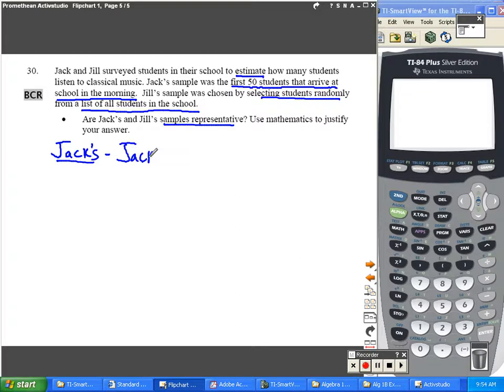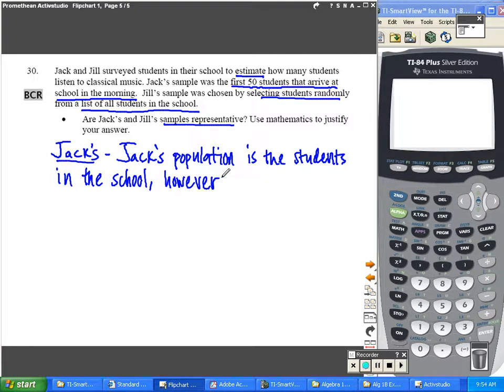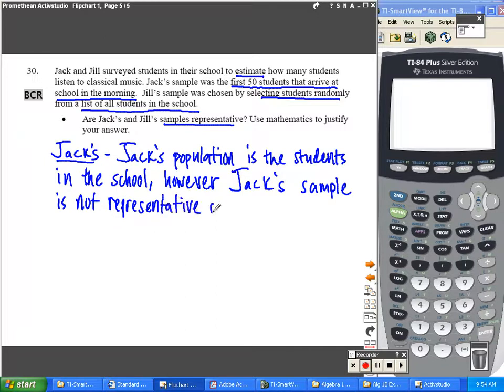Jack's population is the students in the school. However, Jack's sample is not representative of this population because it is a biased sample.